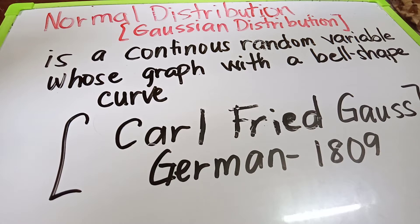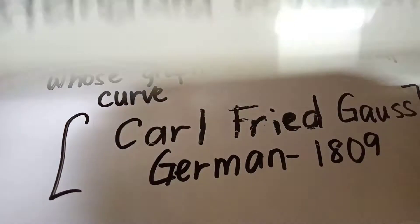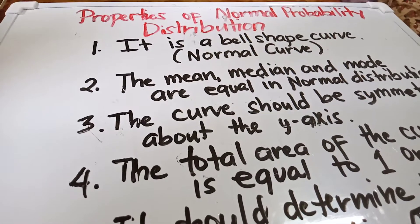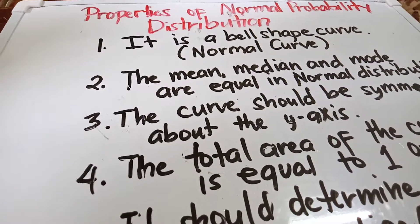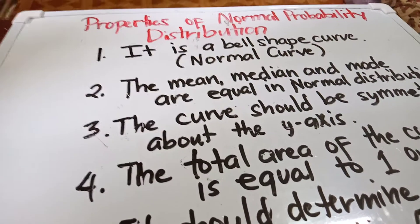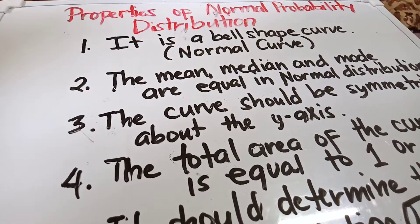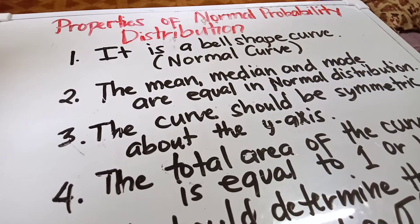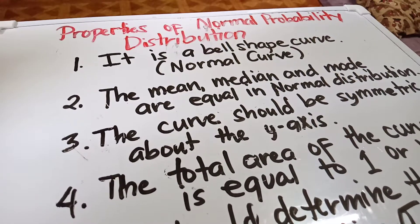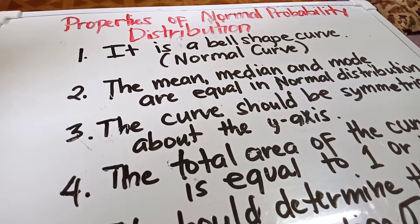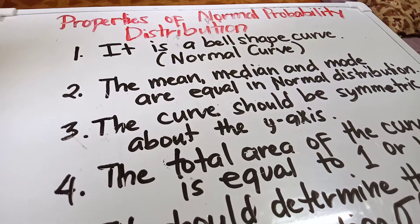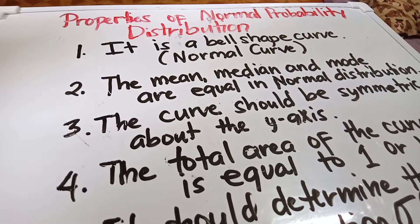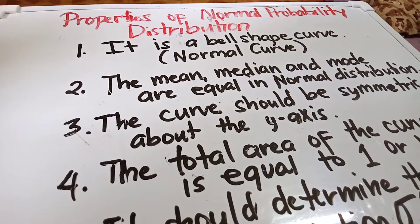We will now go over the properties or characteristics of a normal distribution. First, it is a bell-shaped curve known as the normal curve. Second, the mean, median, and mode are equal in a normal distribution. The mean is the average, the median is the middle value of all numbers, and the mode is the most frequent value.